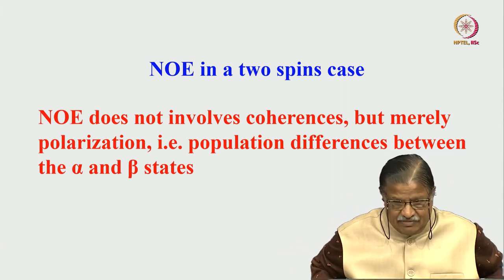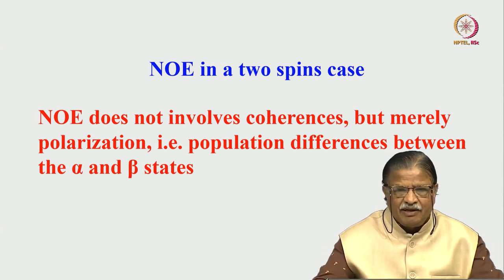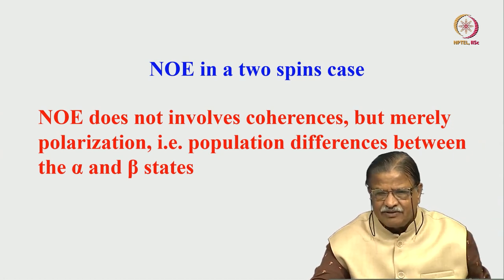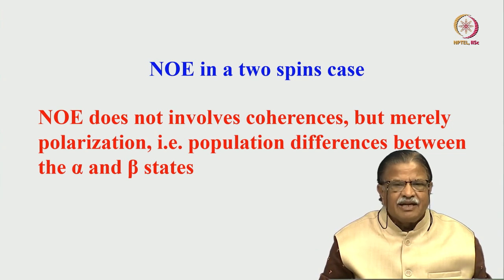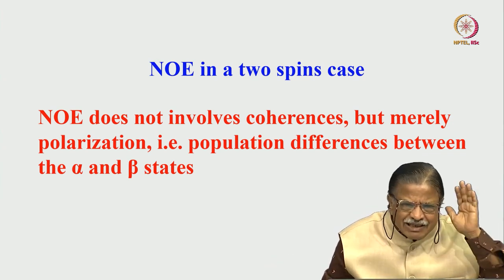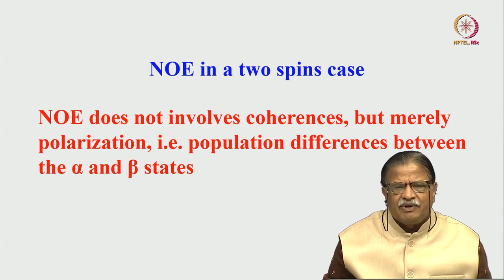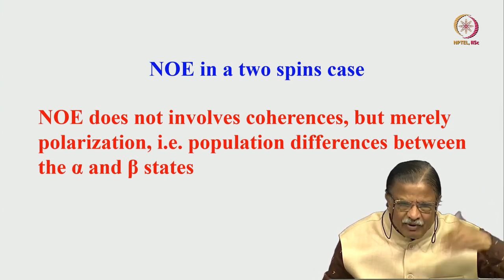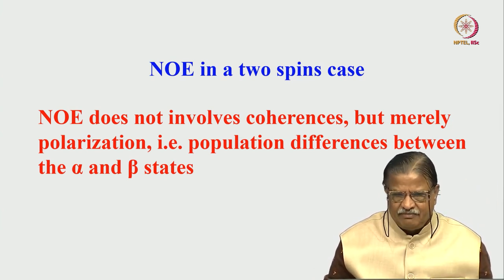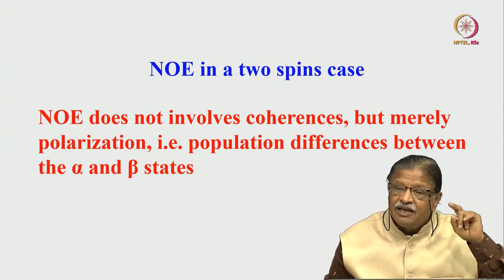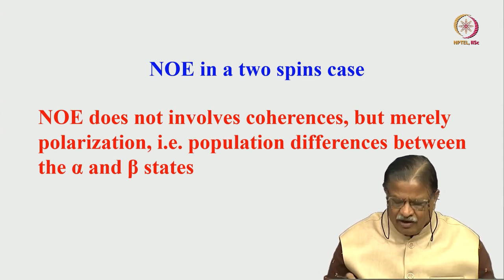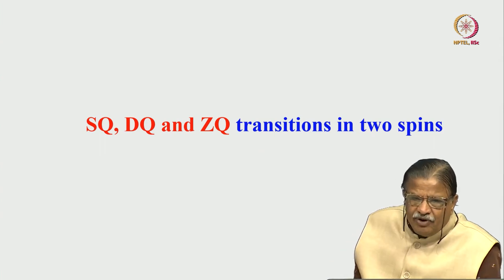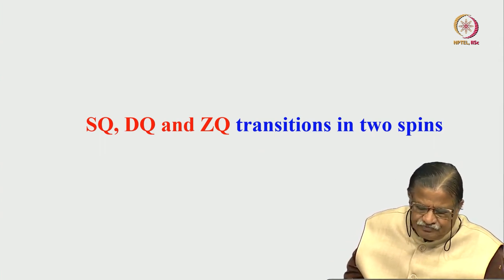To understand NOE, let us start with the two-spin case. Importantly, NOE does not involve coherence as in other NMR experiments where we detect coherence along x or y. Here, only polarization — the population difference between the α and β spin states — matters. It is the population difference between spin states that defines the NOE, not coherences.